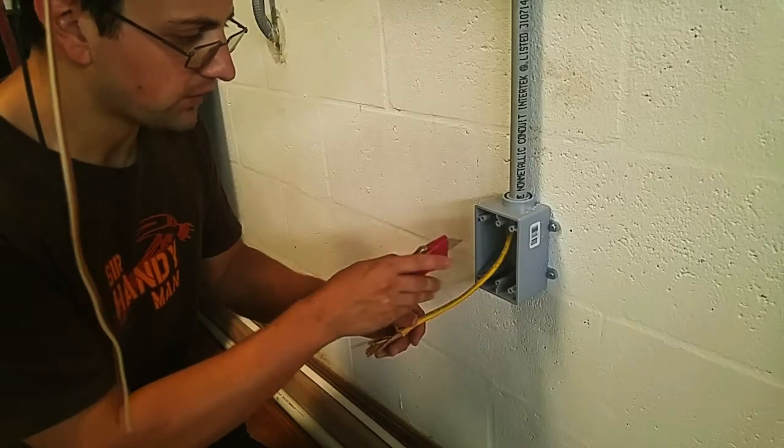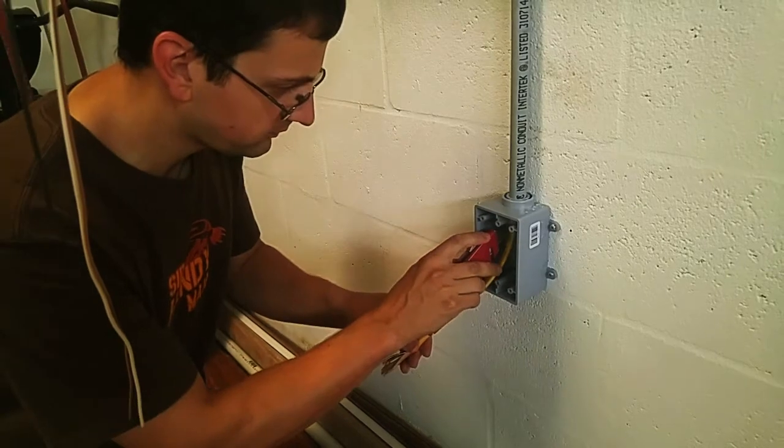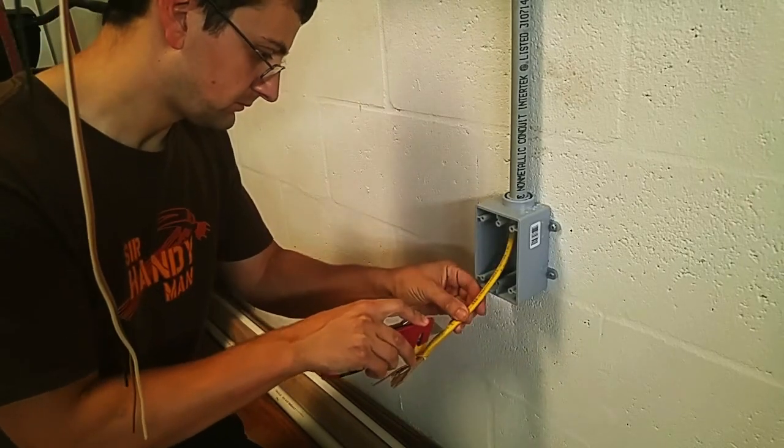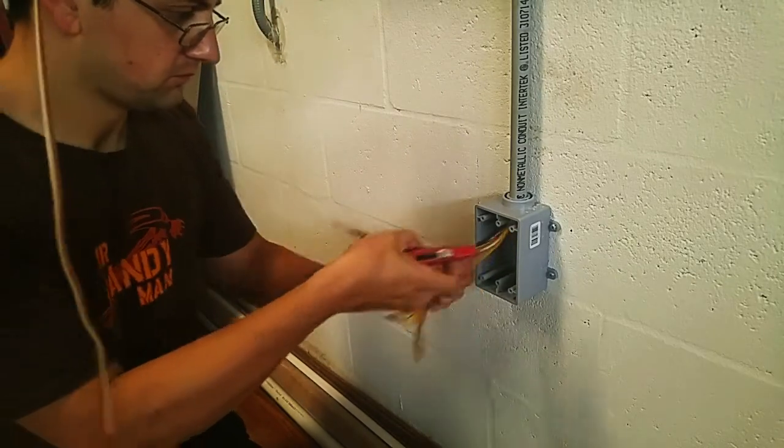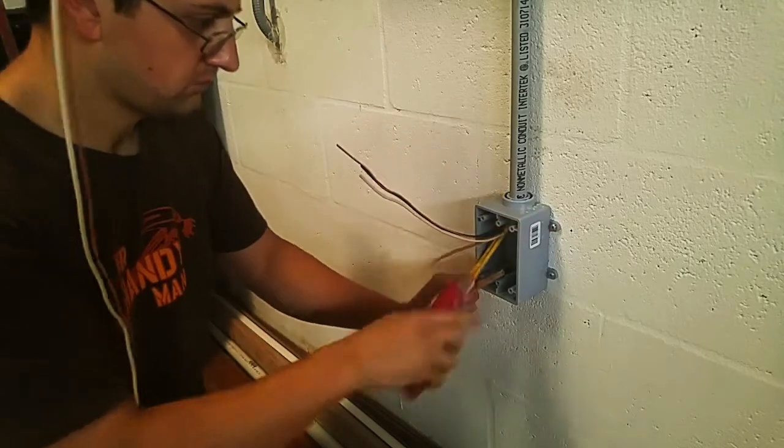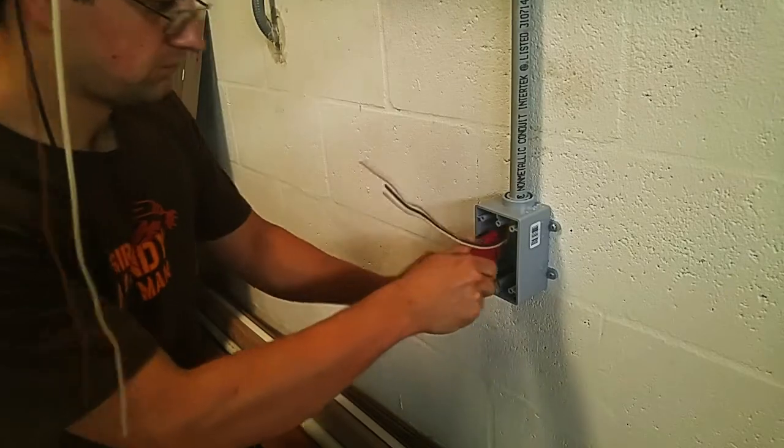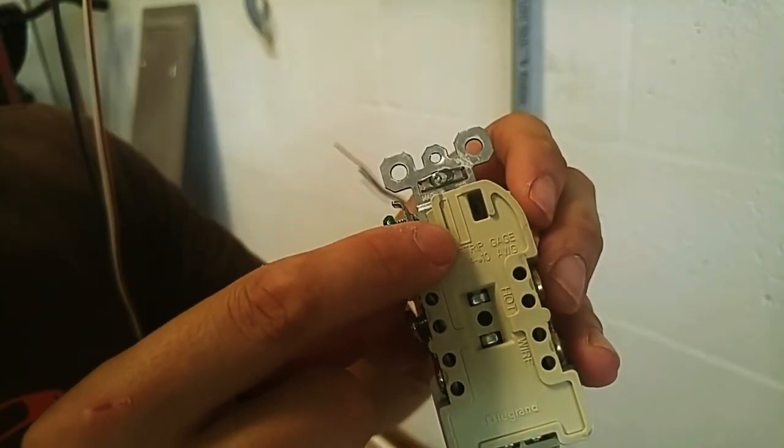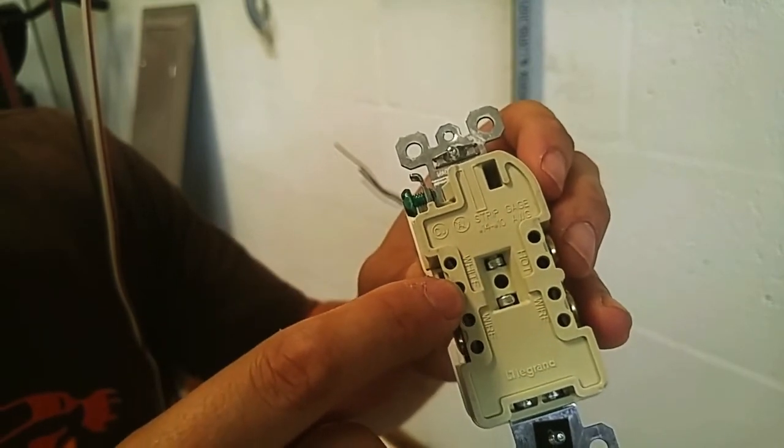I'm making a very shallow cut in the middle of the wire between the hot and the neutral lines. The outlets have a strip gauge on the back, telling you how much of the wire you have to strip to be able to insert it into these quick connect holes.